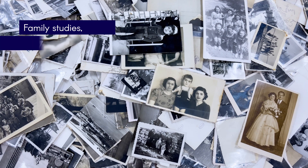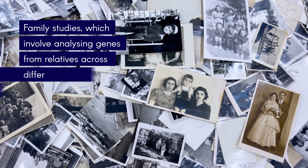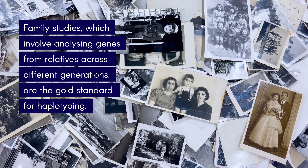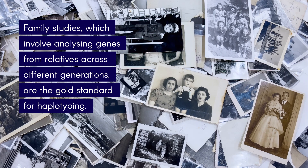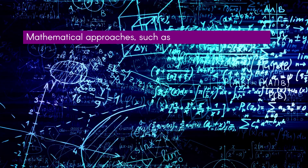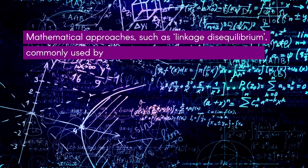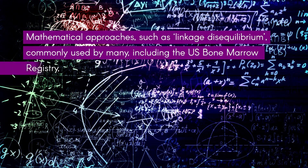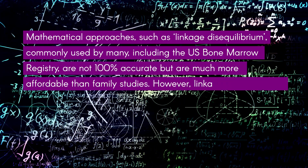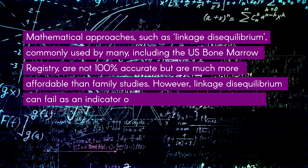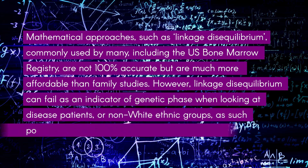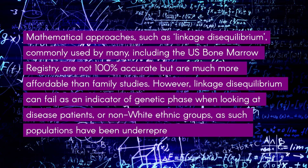Family studies, which involve analysing genes from relatives across different generations, are the gold standard for haplotyping. Mathematical approaches such as linkage disequilibrium, commonly used by many including the US bone marrow registry, are not 100% accurate but are much more affordable than family studies. However, linkage disequilibrium can fail as an indicator of genetic phase when looking at disease patients or non-white ethnic groups, as such populations have been underrepresented in research.